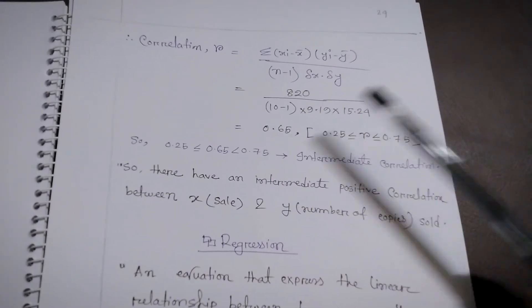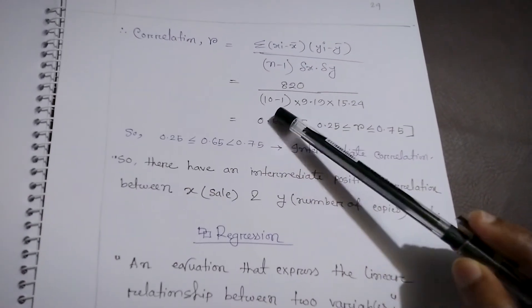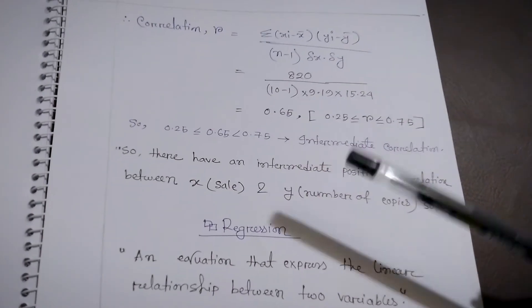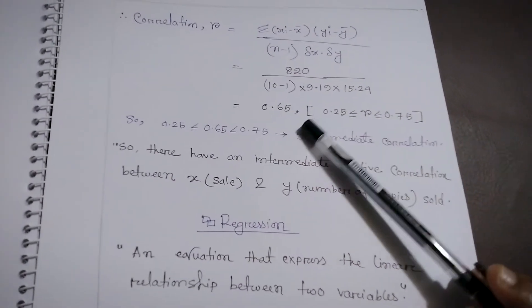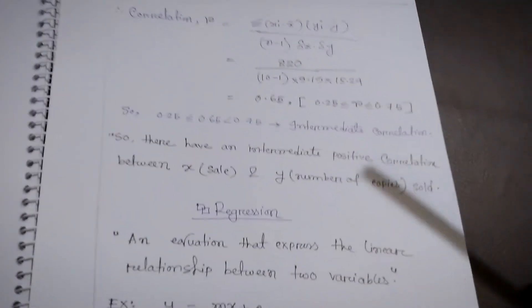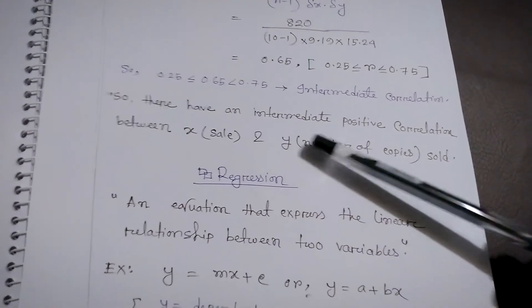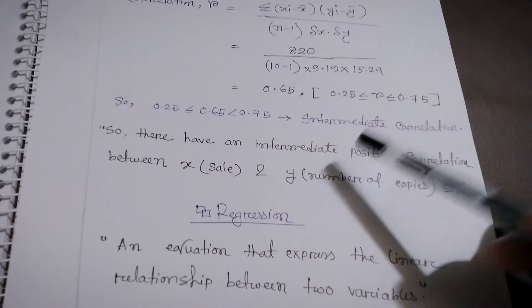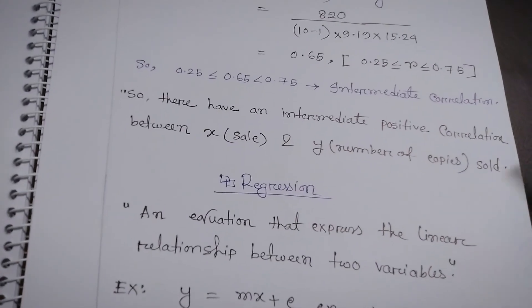Remember, it is a positive correlation because when x is increasing, y is also increasing. Both the sign (positive or negative) and the strength (weak, intermediate, or strong) are important. For example, if x represents sales and y represents number of copies, when sales increase, the number of copies also increases. That's the main thing you need to know in correlation. Next, we will talk about regression.